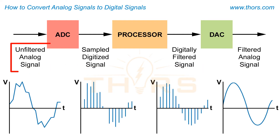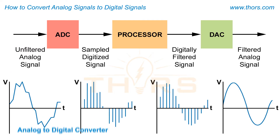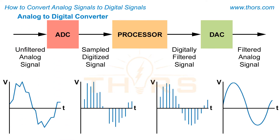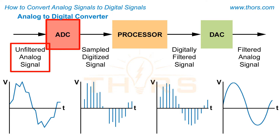As an analog signal is taken, it may have electrical noise, which makes the signal harder to interpret. Therefore, an analog to digital converter or ADC will be used to convert the signal into a digital form.